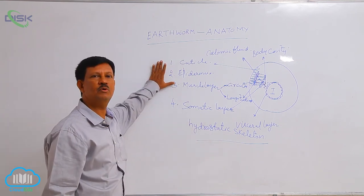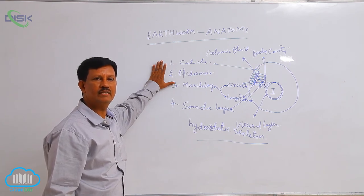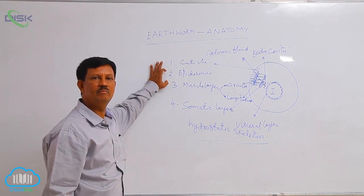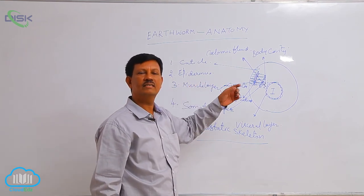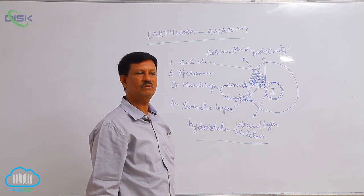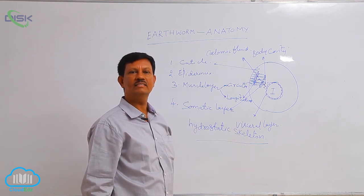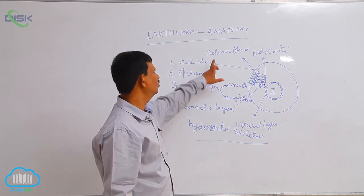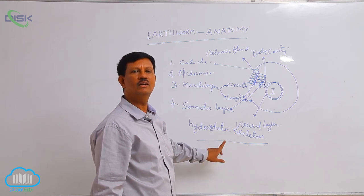To summarize the anatomy of the earthworm: in the body wall, the following layers are present — cuticle, epidermis, musculature, and somatic layer. In the middle region, the alimentary canal is present, externally covered by the visceral layer derived from the mesoderm. In between the body wall and the alimentary canal, there is a body cavity called the coelom, filled with coelomic fluid, which acts as a hydrostatic skeleton useful during locomotion.